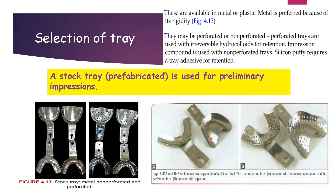Non-perforated stock trays made of stainless steel are used with impression compound, and perforated trays are used with alginate. A stock tray or prefabricated tray is used for preliminary impressions.